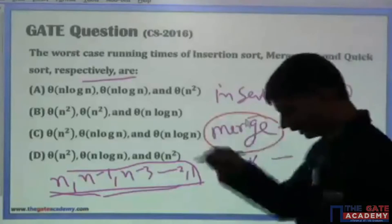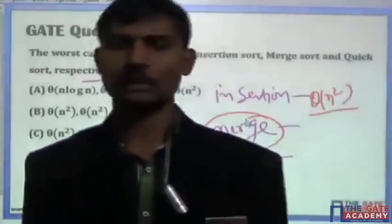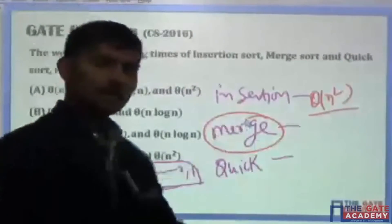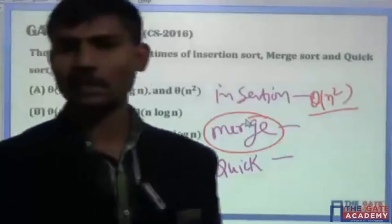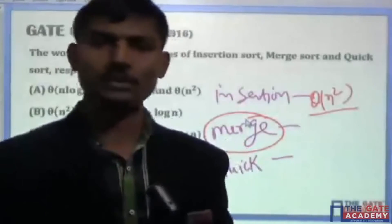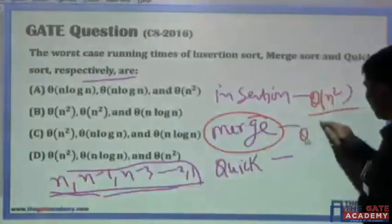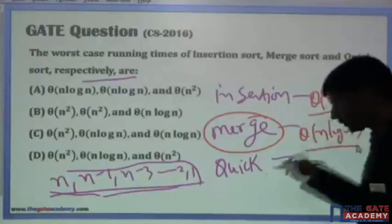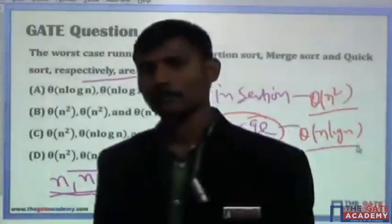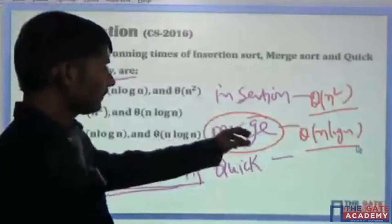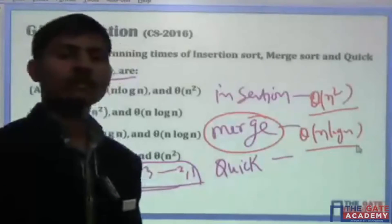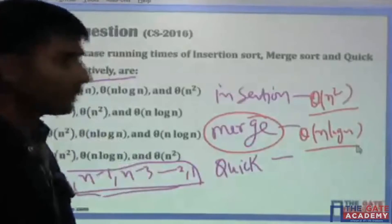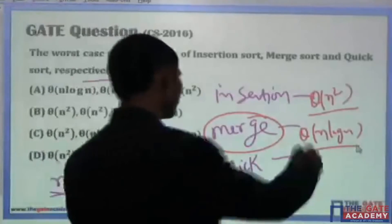The second algorithm is merge sort. We know that merge sort is one of the optimal comparison-based sorting algorithms. Any comparison-based sorting algorithm must make at least n log n comparisons because the height of the decision tree is at least n log n. Merge sort is never greater than n log n and never less than n log n, so it is optimal and the answer for merge sort is n log n.